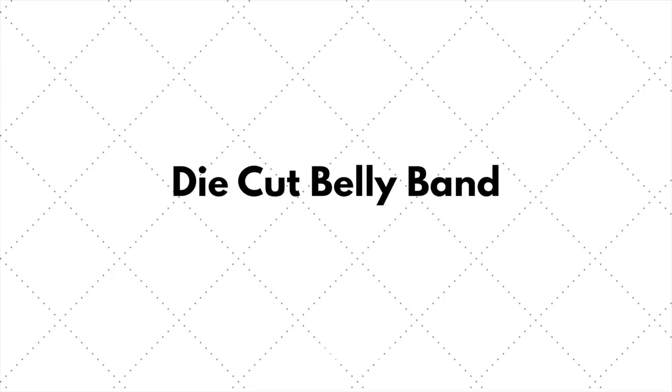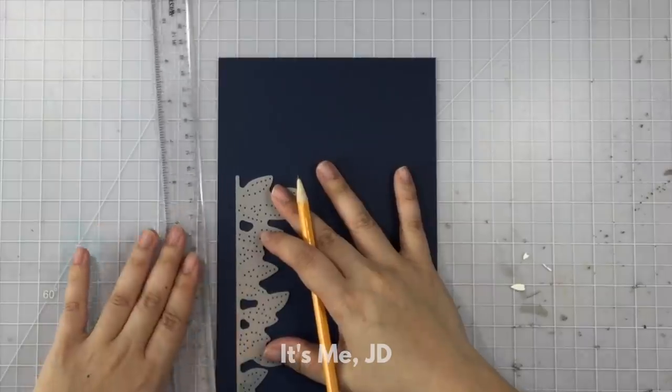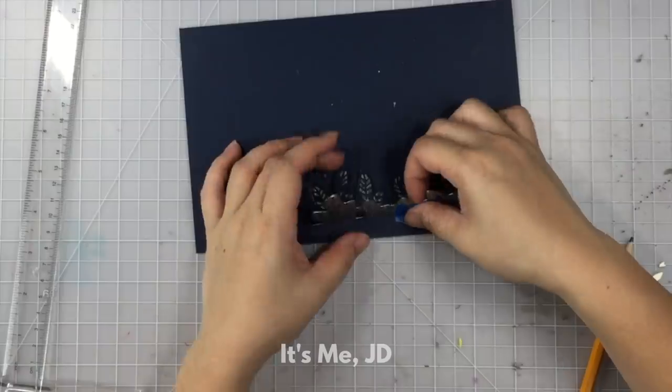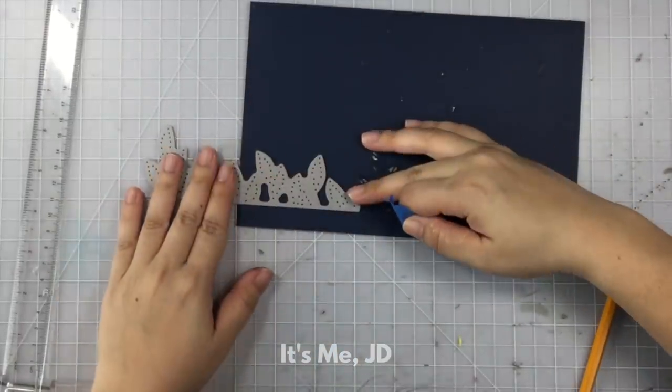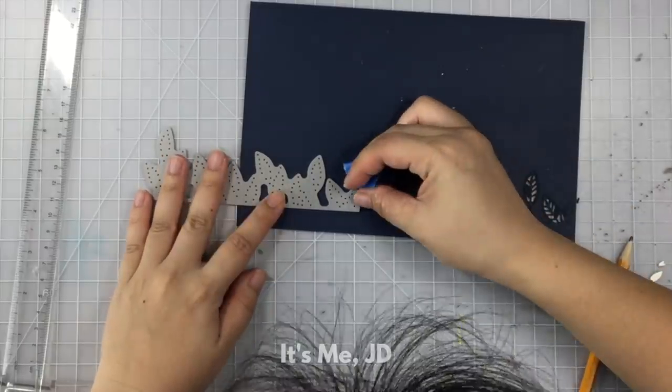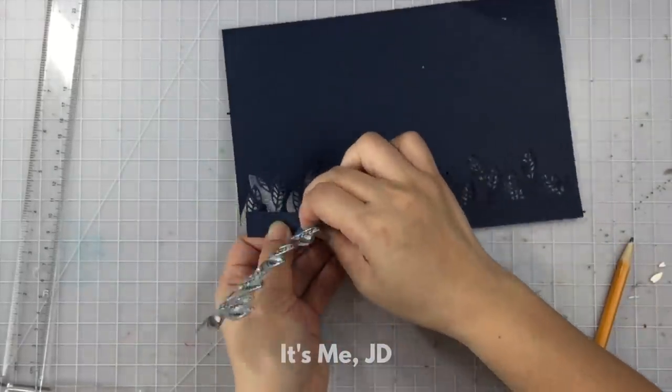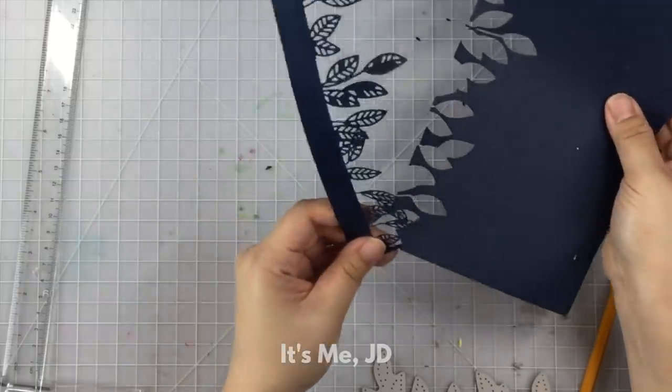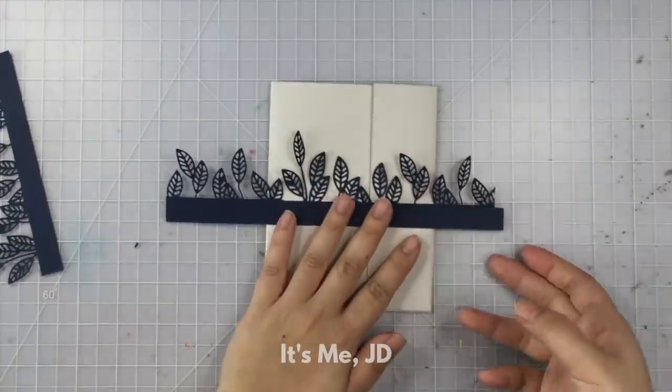This next belly band involves using my border die. I'm just going to mark a line on my paper and then I'm going to line up the border die along my pencil mark then I'll just slide the border die down to make one long strip except in my case I wanted to use up all of my scrap paper so I cut this strip out of some shorter cardstock than I wanted to so I just ended up making two strips of paper and then I'll end up joining them together.